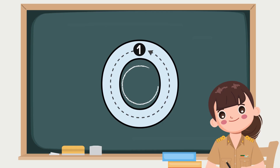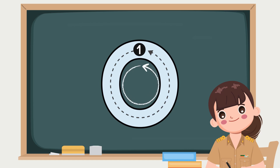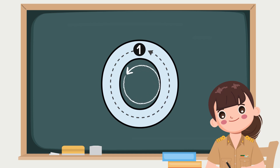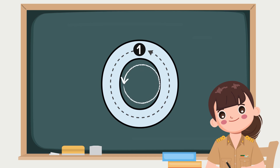Now, let's practice writing big letter O. Make a circle to the left. Make a circle to the left. Good job!